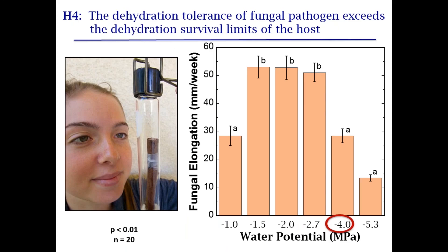Regarding whether the dehydration tolerance of the fungus exceeds that of the host: the host dies between negative 1 and negative 4 megapascals, but the fungus can still grow at those water potentials — confirming the fungus can kill the host even as it dehydrates.